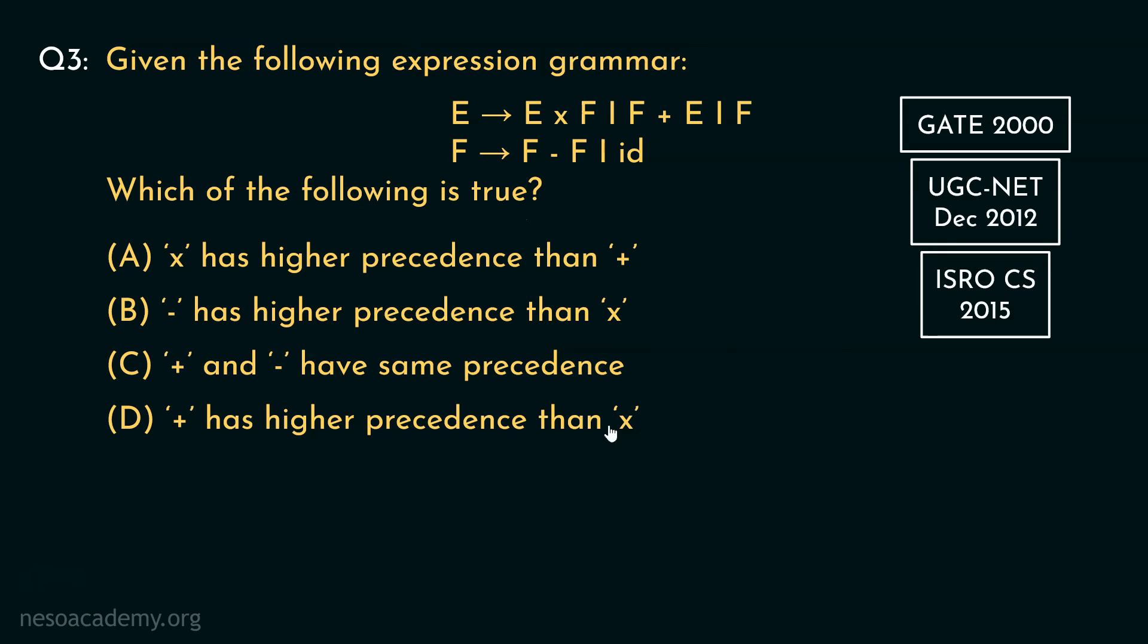Observe the options. All of them are talking about the precedence. Look at the production rules. E is the start symbol and it can derive into and plus. So, these two have the same precedence and also they are lower in precedence from this minus. See, E can generate F and from F we can derive the minus operator. So, minus is the one with the highest precedence order.